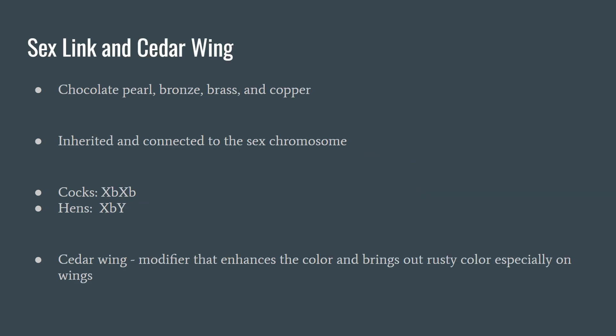Our last topic will cover probably the more complex genetics of guinea fowl and one of the rarest. In guinea fowl there is only one sex-linked variety, known as the sex-link bronze. When paired with the right genetics, there are four named varieties: the fully pearled version is called a chocolate pearl, which is very common in Australia; the semi-pearled non-attenuate version is called bronze; the attenuate fully pearled version is called brass; and the semi-pearled attenuate version is called copper.